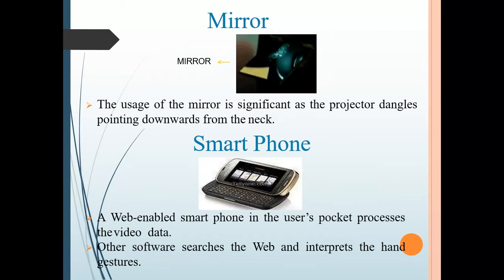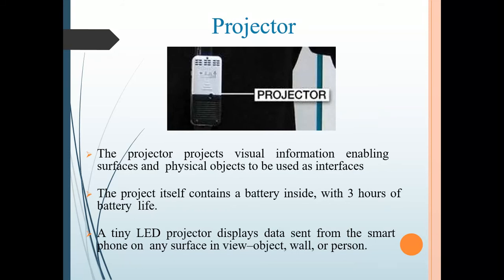Mirror: The usage of mirror is significant, as the projected angle points downwards from the neck. Smartphone: A web-enabled smartphone in the user's pocket processes the video data. Projector: The projector projects visual information, enabling surfaces and physical objects to be used as interfaces.